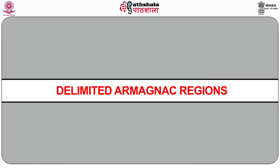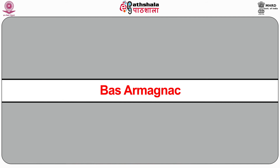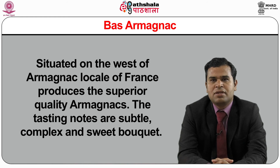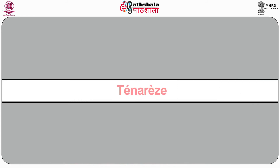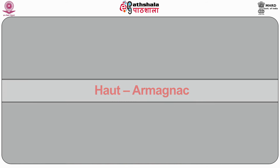There are three delimited Armagnac regions. The first is Bas-Armagnac, situated on the west of the Armagnac locale of France. It produces superior quality Armagnacs with tasting notes of subtle, complex, and sweet bouquet. The second is the Ténarèze region, sandwiched between Bas-Armagnac and Haut-Armagnac, producing very strong flavoured Armagnac which matures very early. The third region is Haut-Armagnac, where cheap quality Armagnac is produced.